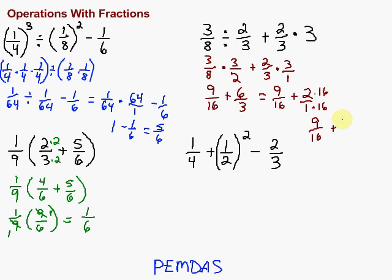And I find that I get nine-sixteenths plus two times sixteen is thirty-two. Sixteen over sixteen times one is sixteen. Then I can add those. Nine plus thirty-two is forty-one over sixteen.